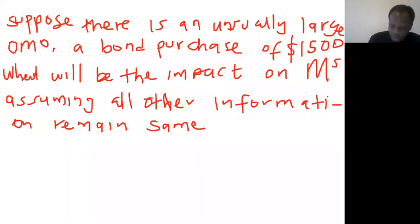Let's look at the second question. Suppose there is an unusually large OMO, a bond purchase of 1500. What will be the impact on money supply assuming all other information remains the same?